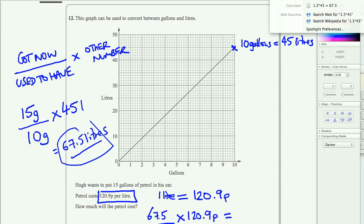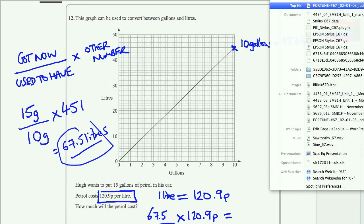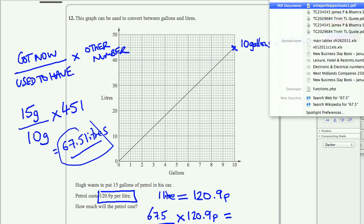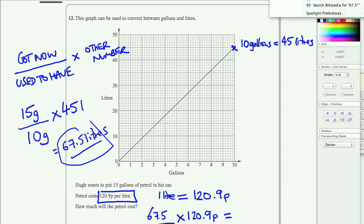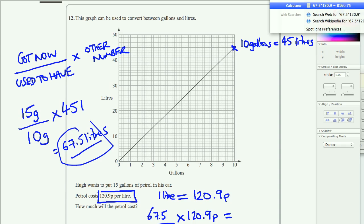We need to remember that when we do this, what we must do is turn it into pounds at the end. So times by 120.9 pence, and we're going to get 8,160.75 pence. That's pence. How do we convert it? We divide it by 100 to get pounds.